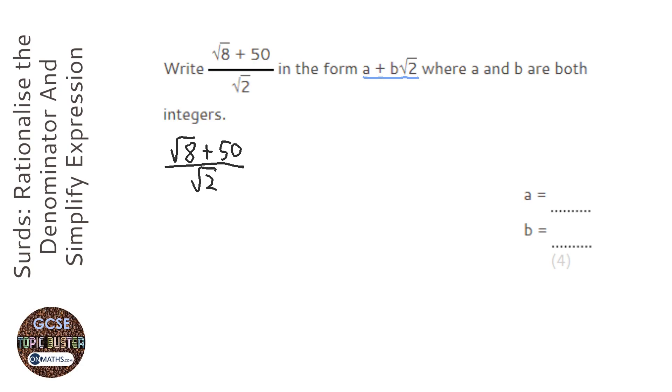Whenever it's just a root 2 at the bottom, all you need to do is times top and bottom by that root 2. When you times a root 2 by itself, it gets rid of the square root completely.